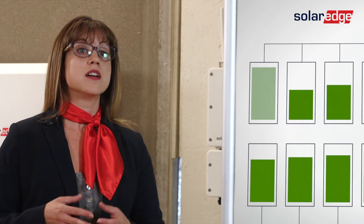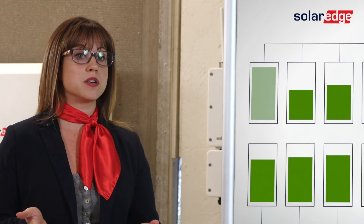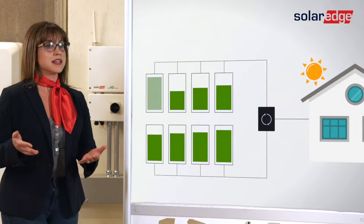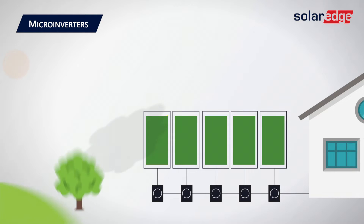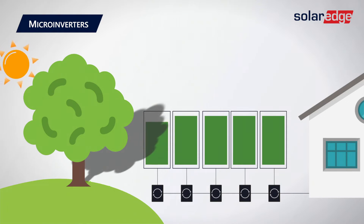I can see that as a feasible option for some homeowners, but what about those with shading issues? That's where module-level power electronics come in, or MLPE. Let's start with microinverters. Essentially, microinverters take that inverter from the wall, shrink it down, and multiply it to match however many solar panels you have on your roof. They are installed on the back of the modules and convert power for each one, letting the panels work independently of one another — so if one is experiencing shade, it's not negatively impacting the rest of the string.